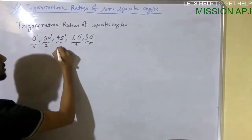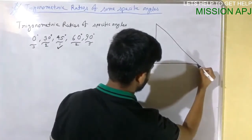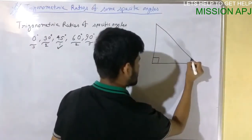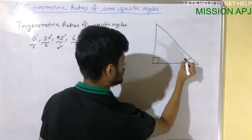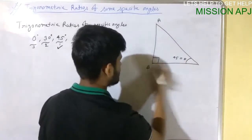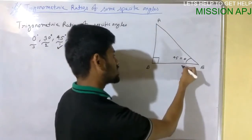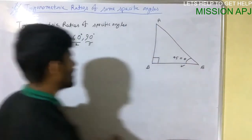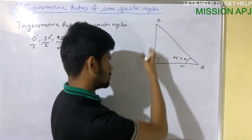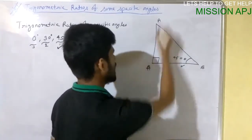Let us draw a triangle first. We always find trigonometric ratios using a right-angle triangle. Let us consider the acute angle as theta equals 45°. We need to find the trigonometric ratios with respect to this acute angle. For this we need to find the lengths of the sides of this triangle.